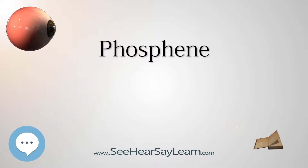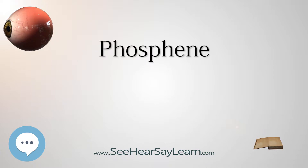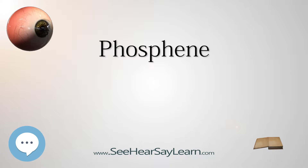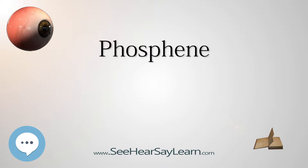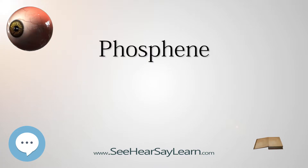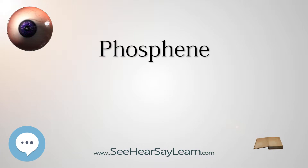The most common phosphenes are pressure phosphenes, caused by rubbing or applying pressure on or near the closed eyes. They have been known since antiquity and described by the Greeks. The pressure mechanically stimulates the cells of the retina. Experiences include a darkening of the visual field that moves against the rubbing.